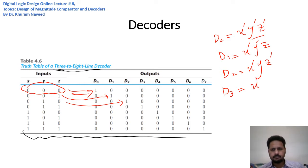x'yz. For D₄ we have xy'z' (sorry, this should be x). For D₅ we have